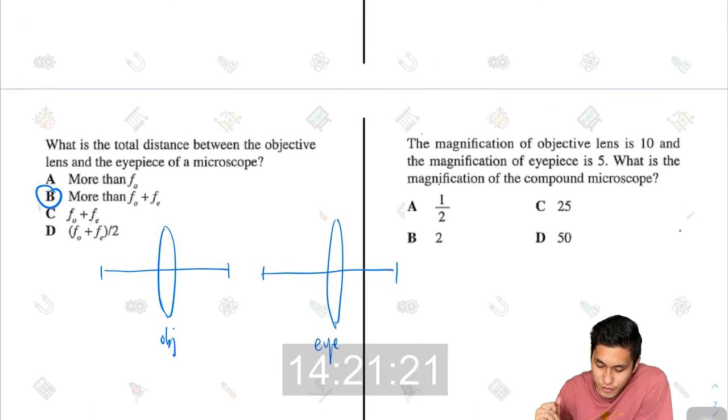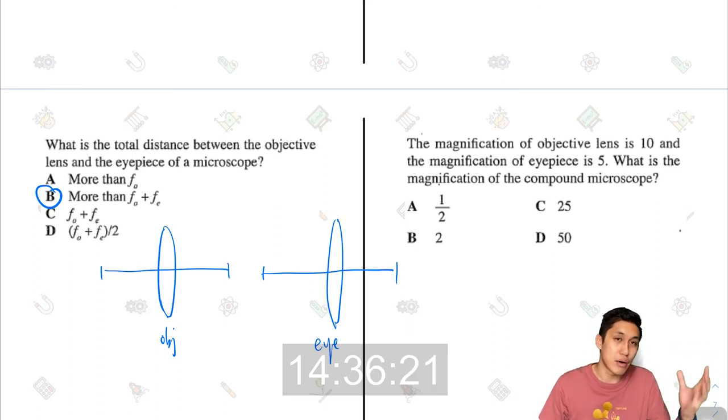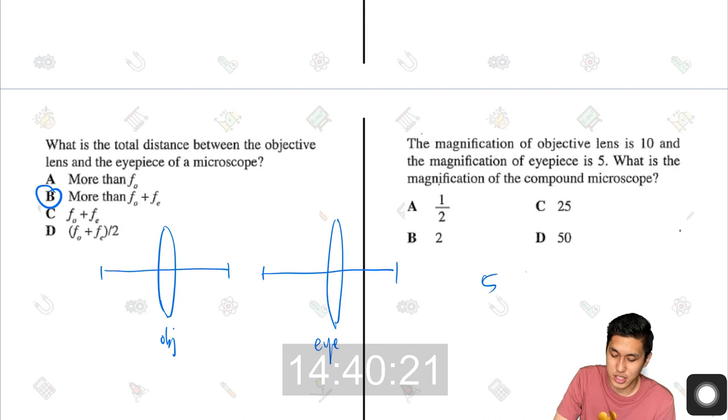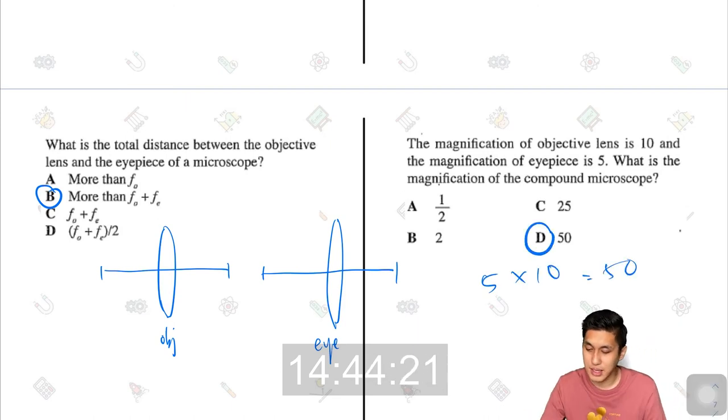The magnification of objective lens is 10 and the magnification of eyepiece lens is 5. What is the magnification of the compound microscope? Magnification will actually be multiplied. If you magnify through two lenses, then the magnification of the first lens multiplied by the magnification of the second lens. That is the total magnification. So 5 multiplied by 10, you get 50. The answer is D.